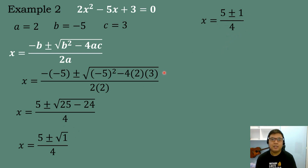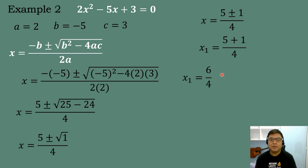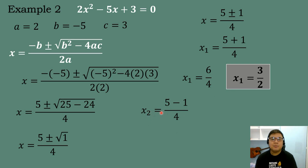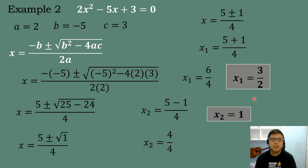Let's solve the roots. The first root: X sub 1 equals 5 plus 1, all over 4. So 5 plus 1 equals 6 over 4, which in lowest terms equals 3 over 2. For the second root: X sub 2 equals 5 minus 1, all over 4. So 5 minus 1 equals 4, and 4 divided by 4 equals 1. Therefore, the two roots are 3 over 2 and positive 1.